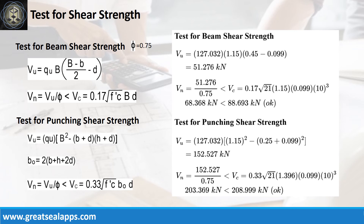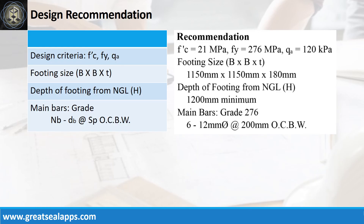Design recommendation: fc' equals 21 MPa, fy equals 276 MPa, Qa equals 120 kPa. Footing size is 1,150 mm x 1,150 mm x 180 mm. Depth of footing from natural grade line: 1,200 mm. Main bars of grade 276: six pieces of 12 mm bar at 200 mm on center both ways.